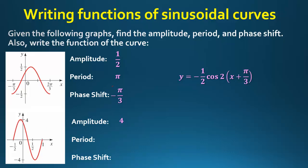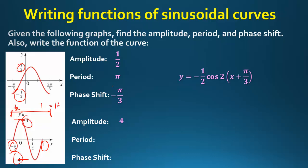For the second graph: amplitude is 4 since it goes from 4 to –4, so there's no vertical shift. The period runs from –½ to 1, which is a length of 3/2. The phase shift is –½ since we shifted left by ½.